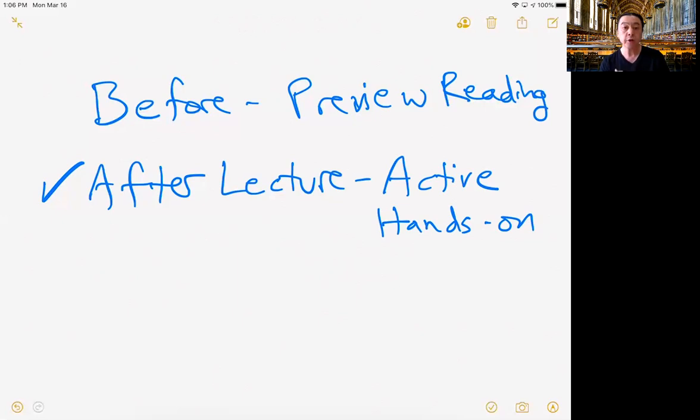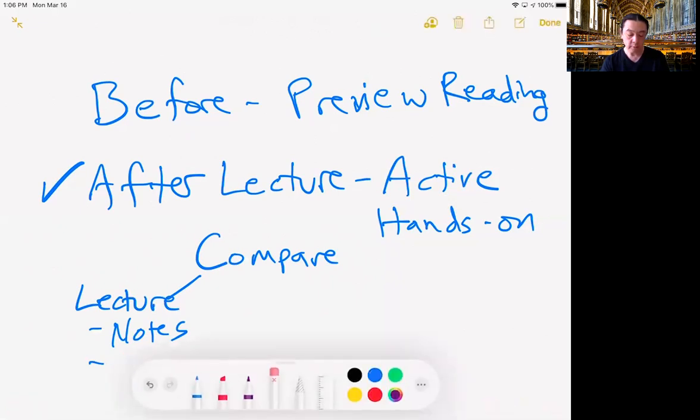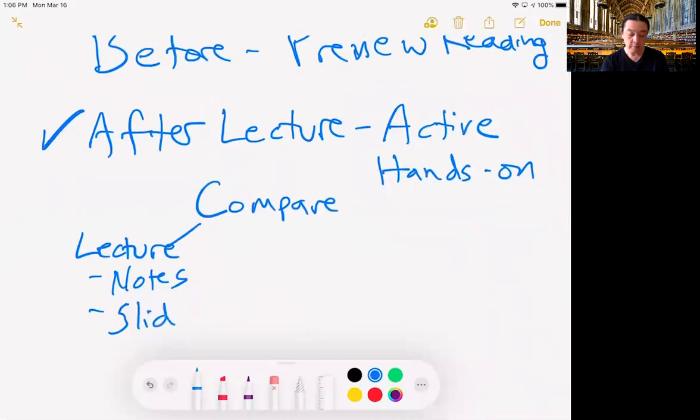So a good activity for your standard lecture and reading class is to compare what went on in class. So in class, you the lecture, you've got the notes you've taken, you might have PowerPoint slides, and then on the other side, you've got the reading.